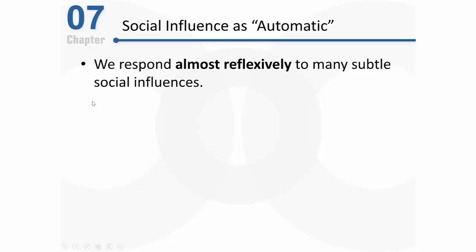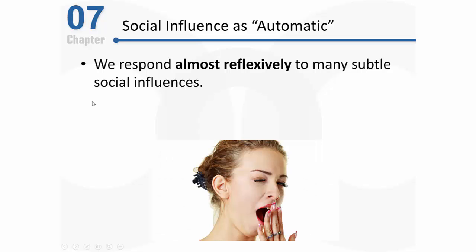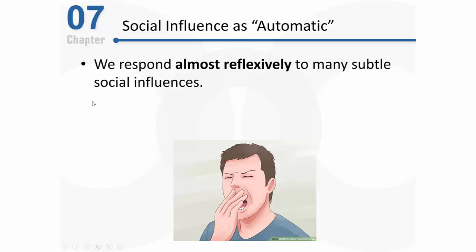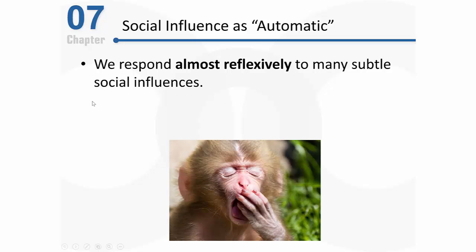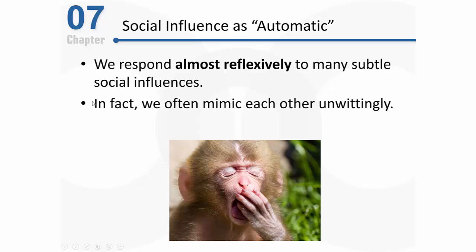We respond almost reflexively to many subtle social influences. For example, if you see somebody yawning, that relatively subtle social pressure can influence you to start yawning. In fact, this effect with yawning is so robust that you might start yawning just when you see a cartoon yawning, or even a monkey yawning. We often mimic each other unwittingly without even really knowing it. This is often referred to as the chameleon effect.